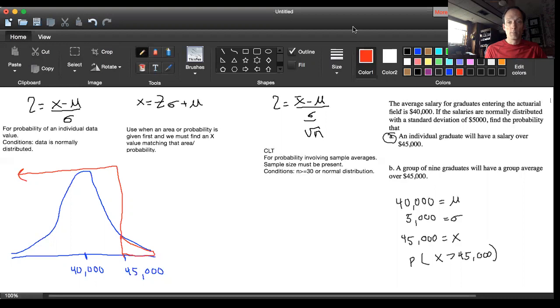Let's get our Z formula moving. Z equals X minus mu. Our X value is $45,000, our population average is $40,000, and our standard deviation is $5,000. So our Z value is going to be 1.00. When we look that up on our Z table, the matching area comes out to 0.8413.